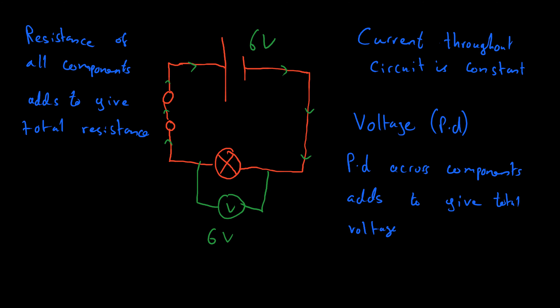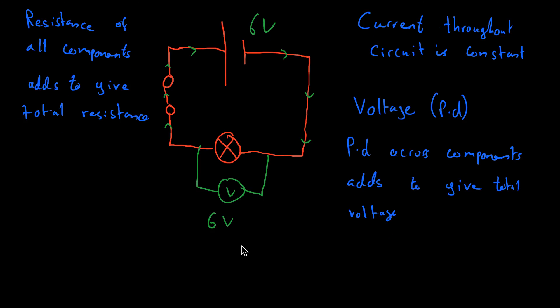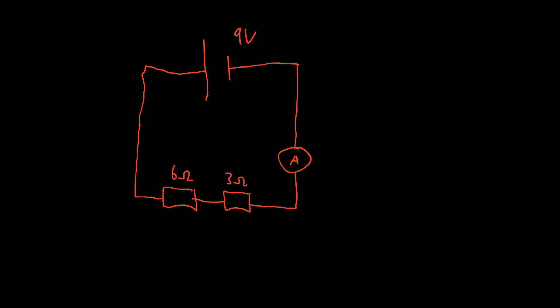So let's have a look at a slightly more detailed circuit where we can do some calculations. Here is a series circuit where you have two resistors placed in series. We have an ammeter here which means we're going to read the current, and we have a cell which produces 9 volts. What I want to work out is the potential difference across each resistor.